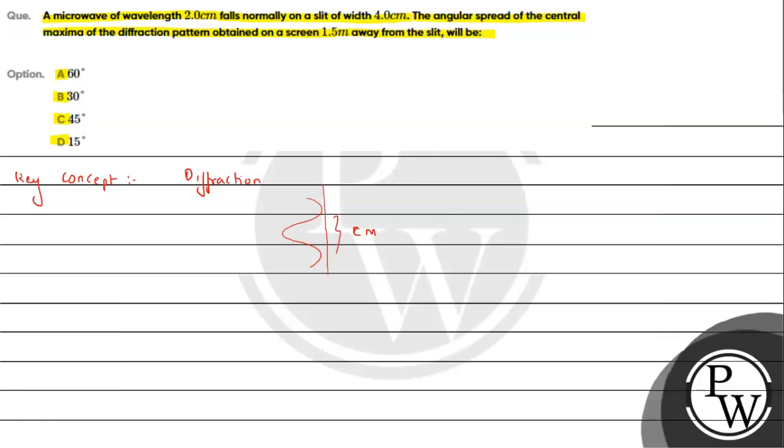For the minima condition, we can write: a sin θ = nλ. From the question, we need to find the angular spread of the central maxima. For the first minima (n=1), sin θ equals